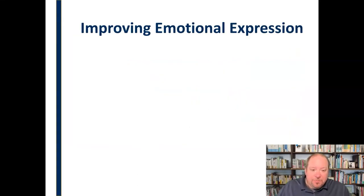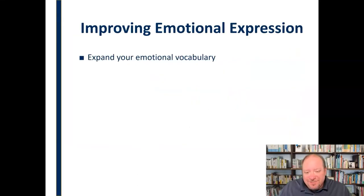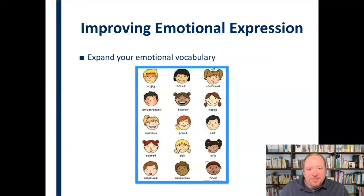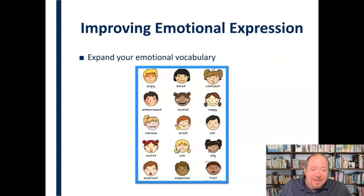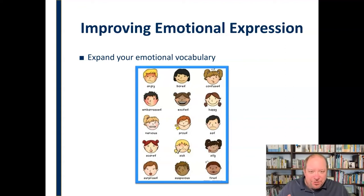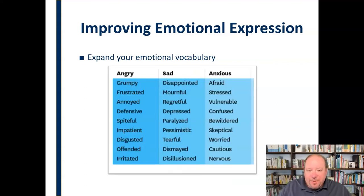If we're going to improve our emotional expression, first it starts with expanding our emotional vocabulary. When you were a kid, maybe you had those charts where your parents or teacher would say, 'How are you feeling? Point to the emotion you're experiencing. Are you angry? Are you scared?' We need to start with that, but move beyond it. For every emotion, there are a variety of different shades and levels. There's a difference between grumpy, frustrated, spiteful, irritated, and offended.